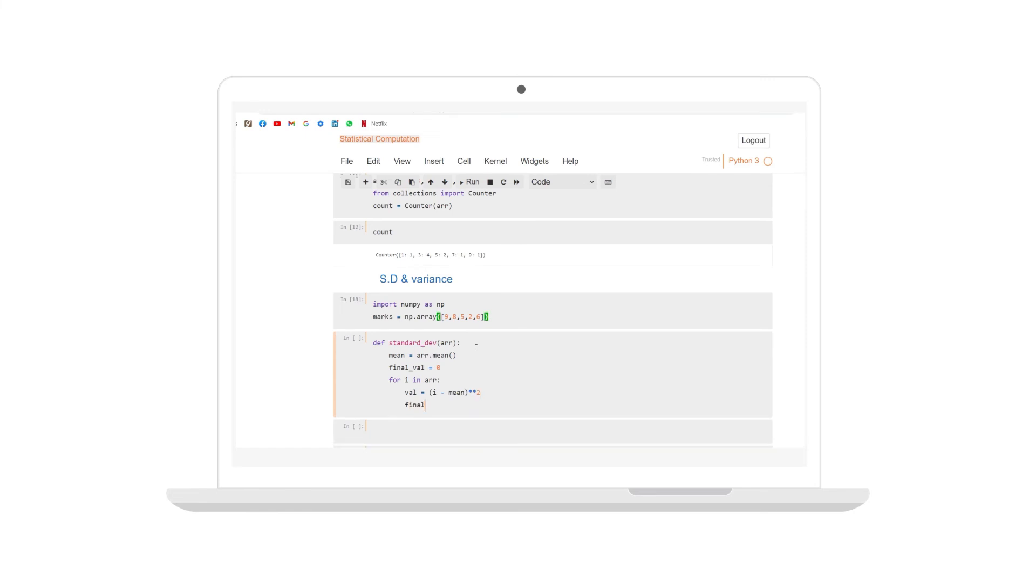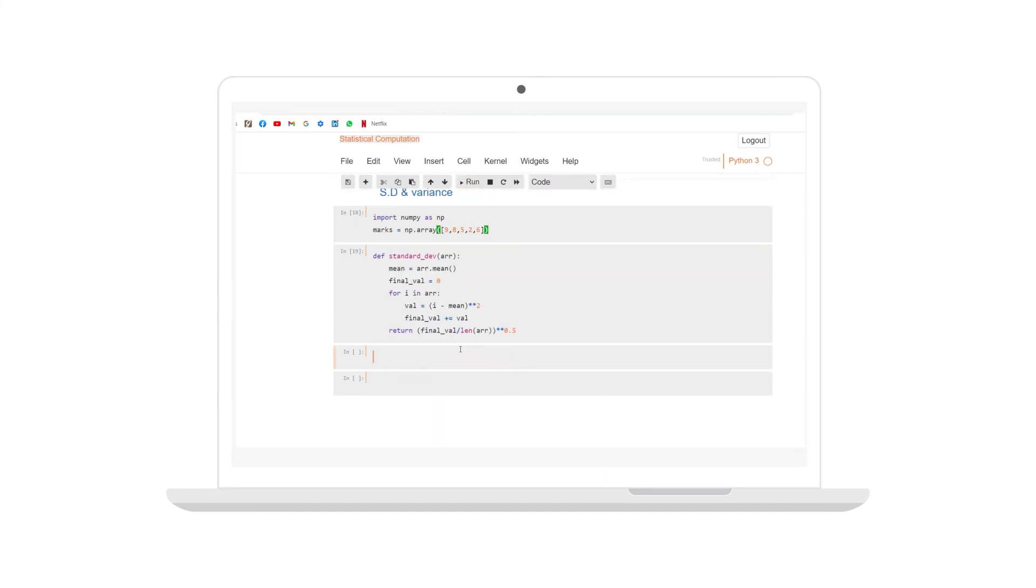Now you add this to the final value. And then you return the division of the finalval with length of the array raised to the power 0.5. That means square root of this particular value. Now if I run this function, standard dev of marks.